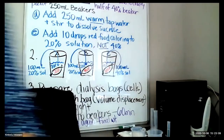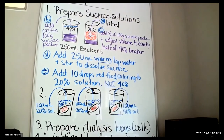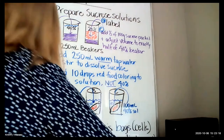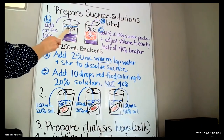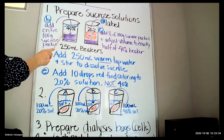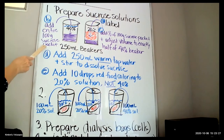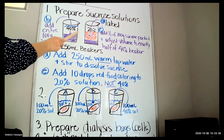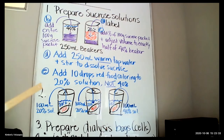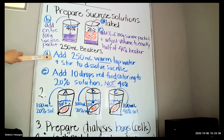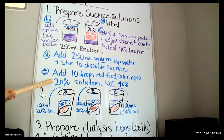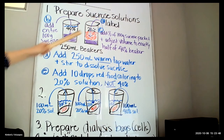Now at the board: you have two beakers — one 40% and one 20%. First, add your entire 100-gram sucrose packet to the 40%, and only about half into the 20%, checking that it's exactly half by volume. Then add 250 milliliters of warm water to each, stir and dissolve. Finally, add 10 drops of red food coloring to your 20% beaker only, not to the 40%.